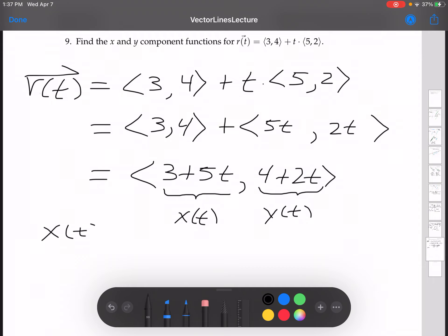So, x of t is 3 plus 5t and y of t is 4 plus 2t.